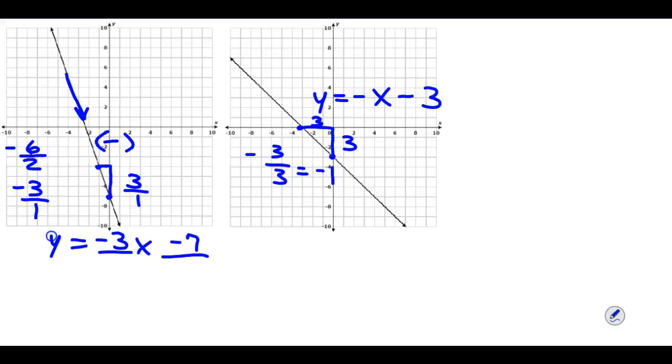It is not wrong to say it's negative 1x minus 3. But you'll usually see it as negative x because we don't put that coefficient of 1 to indicate that value. Well, that's writing an equation of a linear function in slope-intercept form. And that's all I have to say about that. Thank you.